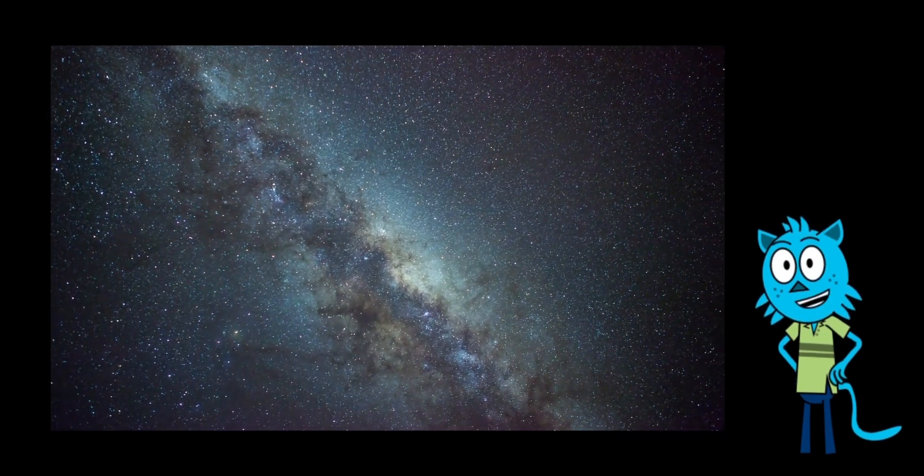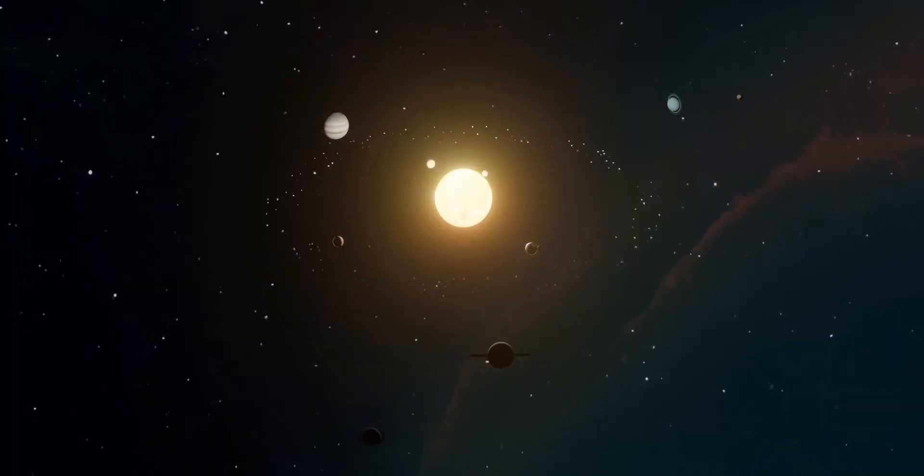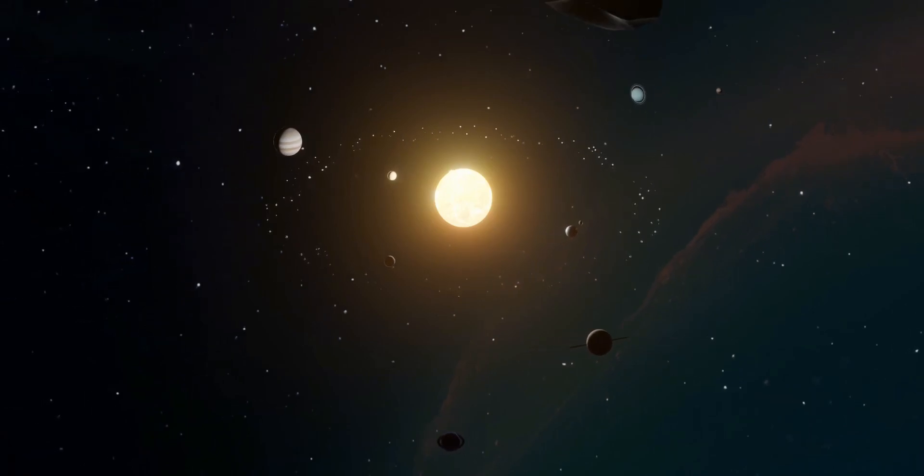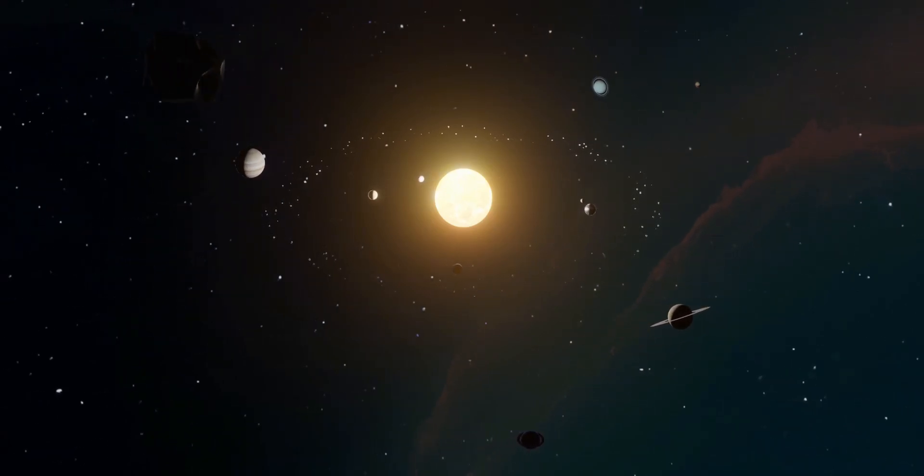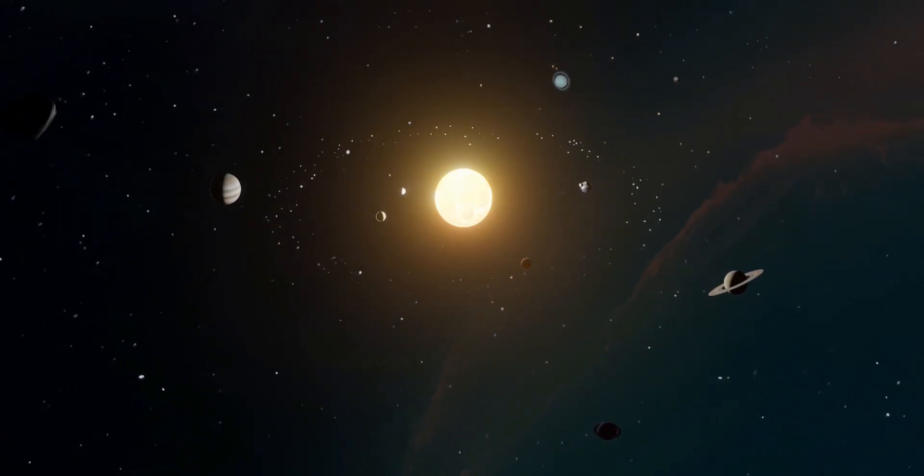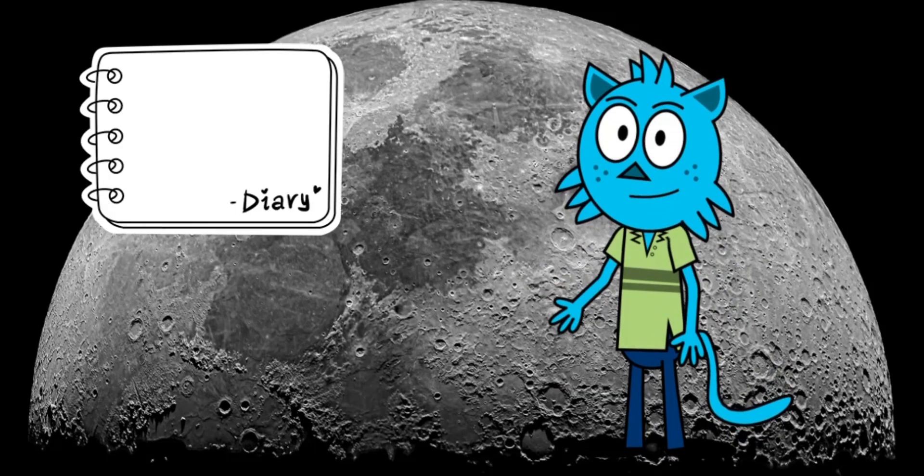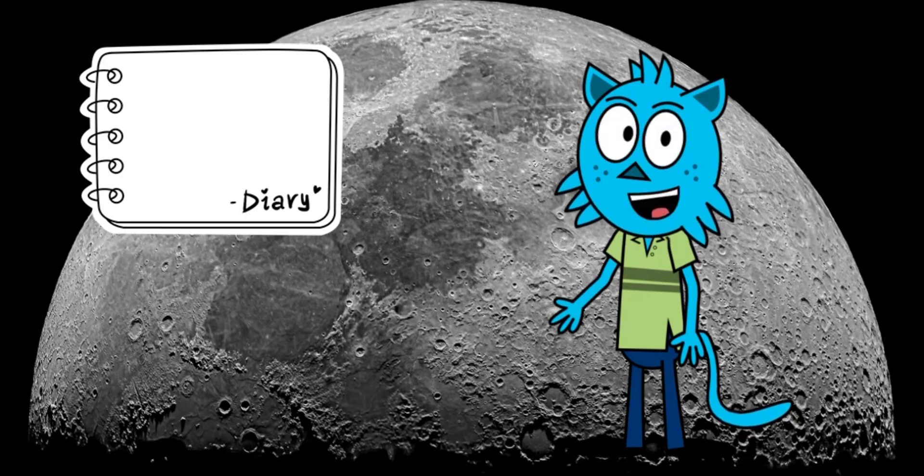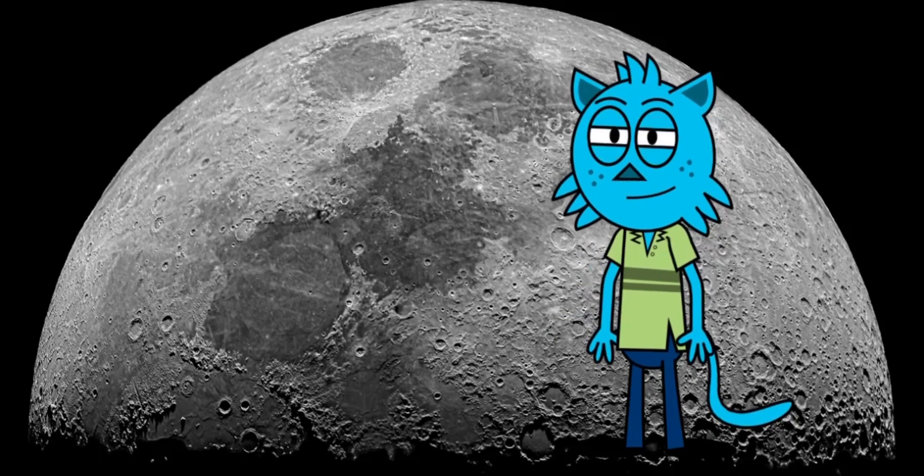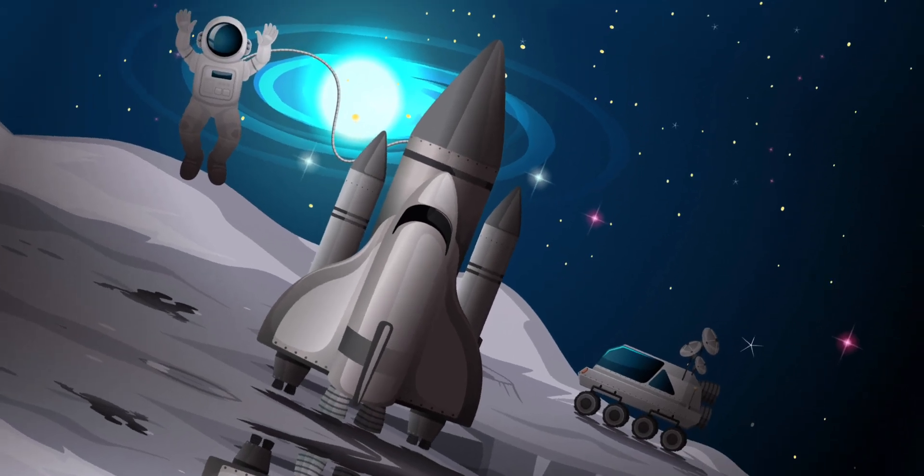Our solar system has eight planets, and the one we live on is called Earth. One of the most famous things in space is the moon. It is a natural satellite that orbits around the Earth, and humans have even landed on it.